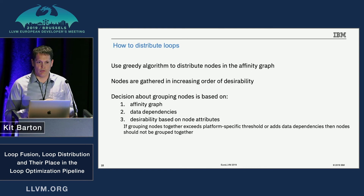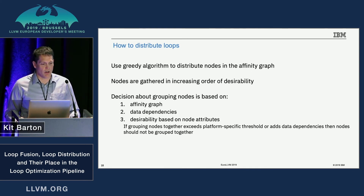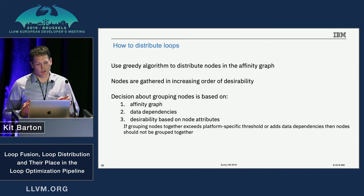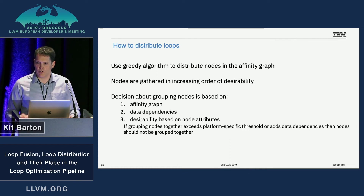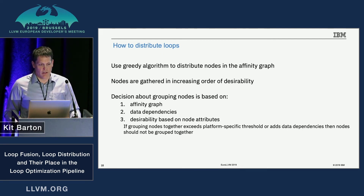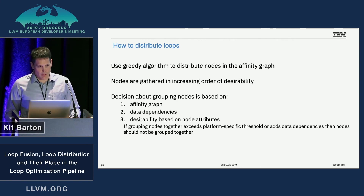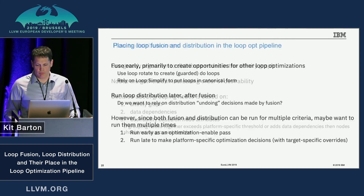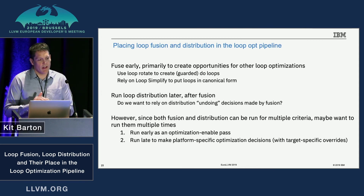The affinity graph is an undirected weighted graph. The nodes are strongly connected components from the DDG — statements that need to stay together because of dependencies. Nodes have attributes like coarse register pressure approximations and backend-specific information. The edges represent affinity between nodes — a reason you'd want to keep two nodes together. We walk the graph greedily, putting nodes together based on edge weights as long as they don't exceed machine model thresholds.